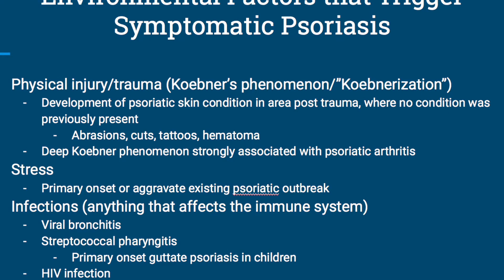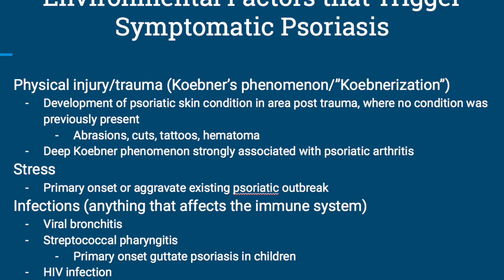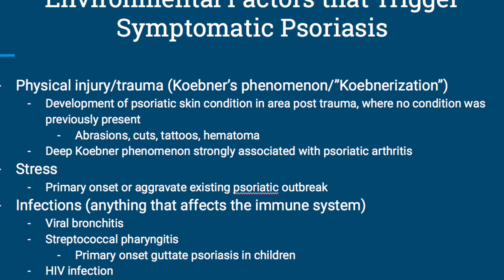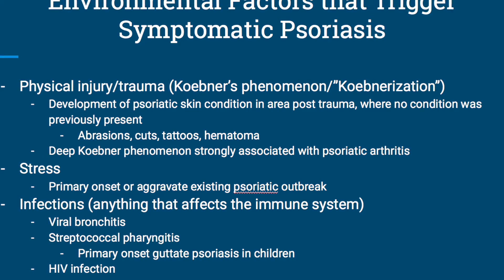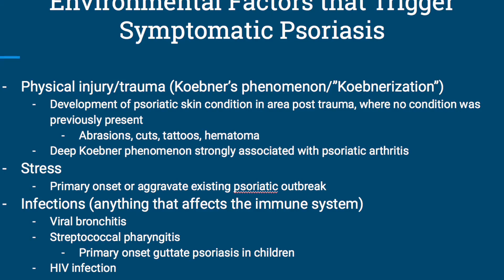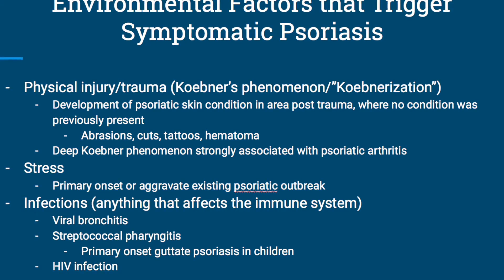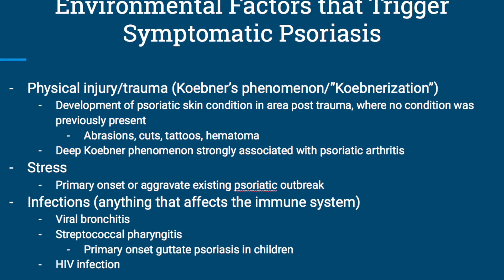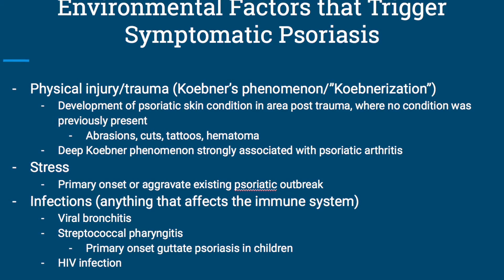Environmental factors tend to trigger psoriasis to become symptomatic in individuals who are genetically predisposed. Some of these can include physical injury or Koebnerization — Koebner's phenomenon. This is the development of a psoriatic outbreak in response to an abrasion, cut, tattoo, or hematoma. Deep Koebner phenomenon is also strongly associated with psoriatic arthritis.